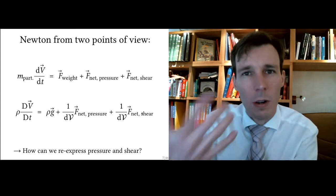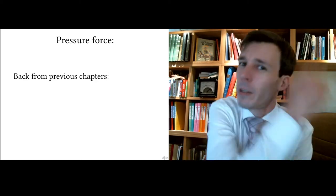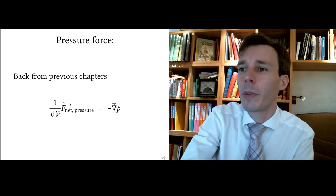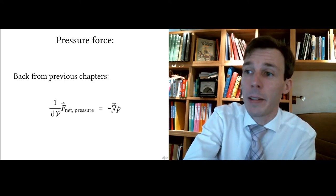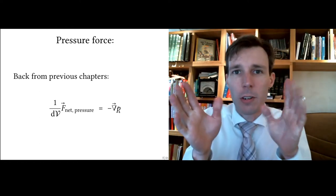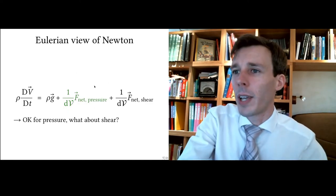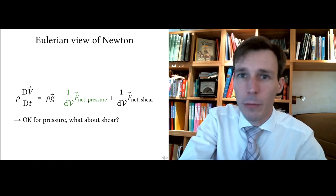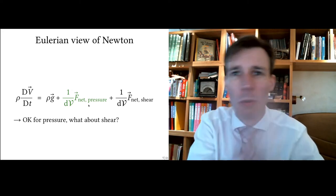The pressure term we dealt with in previous chapters: the net force due to pressure per unit volume is minus the gradient of pressure. It is not pressure itself but the change in pressure through space that matters. So one over the volume of the particle multiplied by the net force due to pressure is simply minus grad P.